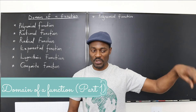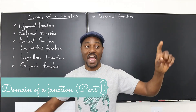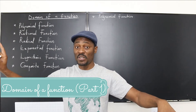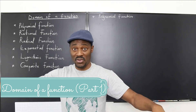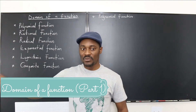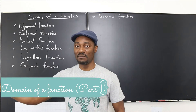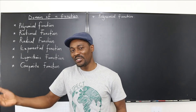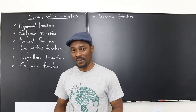It's when every single input has only one output. You can have two kids in that classroom identify the same person as their mother, but you cannot have one kid identify two different people as their mother. That analogy helps you understand what a function is.